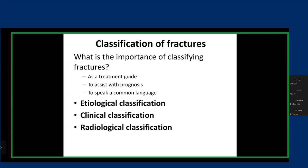We tend to want to classify our fractures. Why is that important? For multiple reasons: one is to guide our treatment, to assess prognosis, and most importantly to speak a common language. When a person describes a fracture to me over the phone, I should be able to thoroughly understand — without having to see the X-ray — where the fracture is, what type it is, and have some understanding of the severity. Most people are good at diagnosing whether there is a fracture, but it's also important to thoroughly describe and classify it.